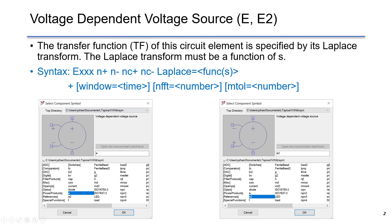The voltage-dependent voltage source can be found as a component symbol as E or E2. It has two control terminals and the output voltage terminals. The only difference between E and E2 is that the input terminal's polarity is opposite.